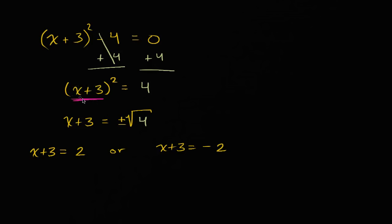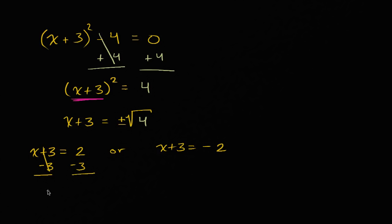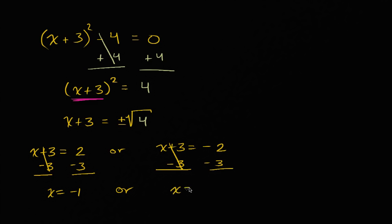If x plus three was positive two, two squared is equal to four. If x plus three was negative two, negative two squared is equal to four. So either of these would satisfy our equation. If x plus three is equal to two, we subtract three from both sides and we're left with x is equal to negative one. Or, subtracting three from both sides of the other equation, x is equal to negative two minus three, which is negative five.